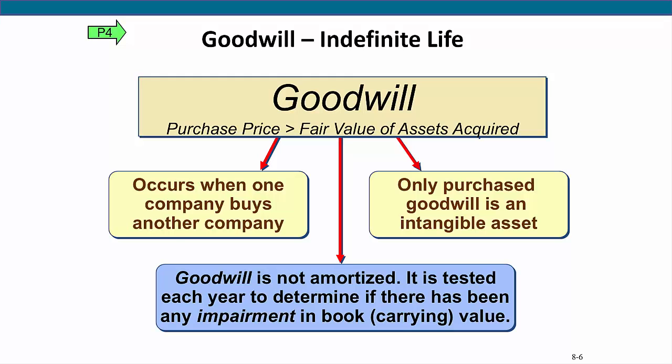An intangible asset called goodwill can be created when one company buys another company. Goodwill is the most frequently reported intangible asset and is a premium paid for such things as a prime location, a customer base, or a reputation. If the purchase price of the company is greater than the fair value of its net assets and liabilities acquired, goodwill is associated with the transaction. Goodwill is not amortized. Each year, we must test to see if there has been any impairment in the carrying value of the goodwill, and if impairment exists, we will reduce the goodwill account and recognize a loss in value.